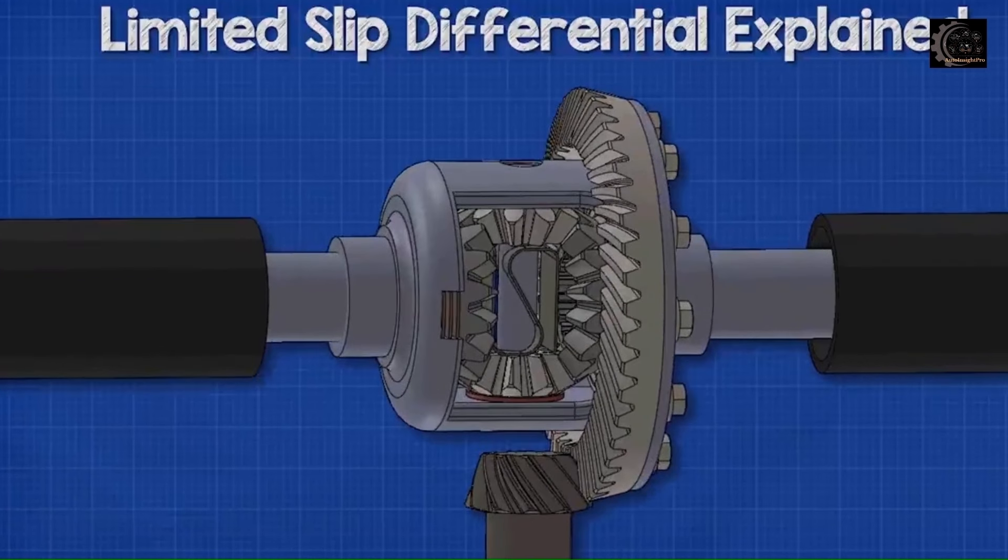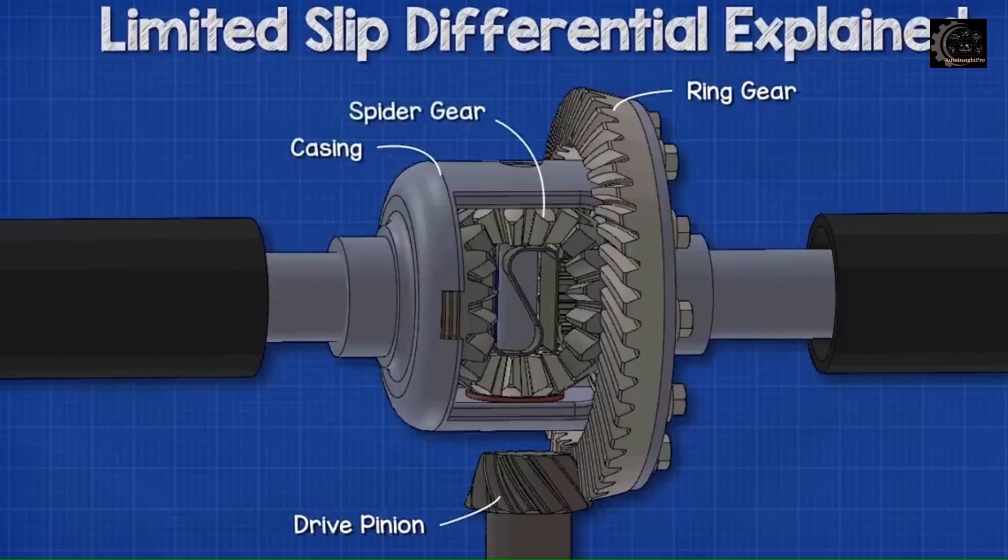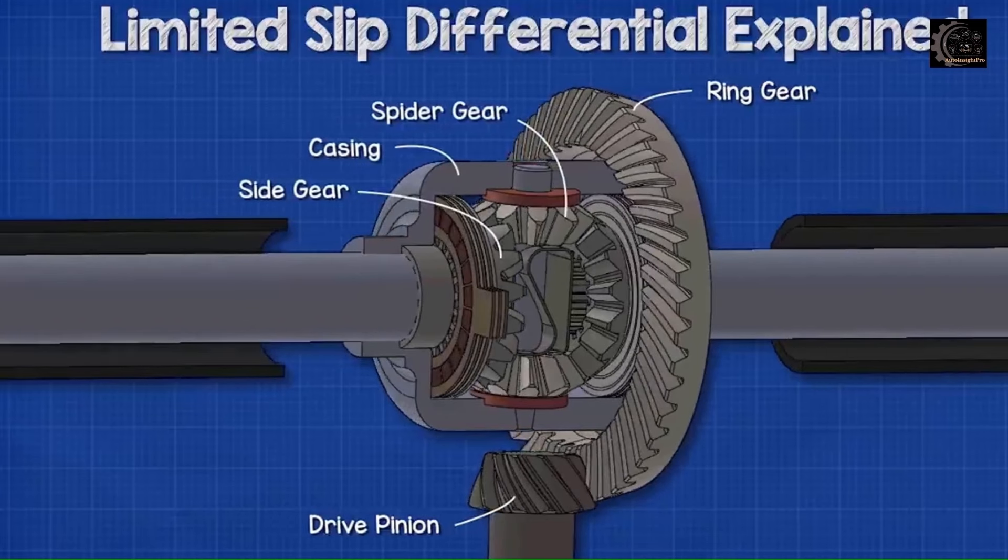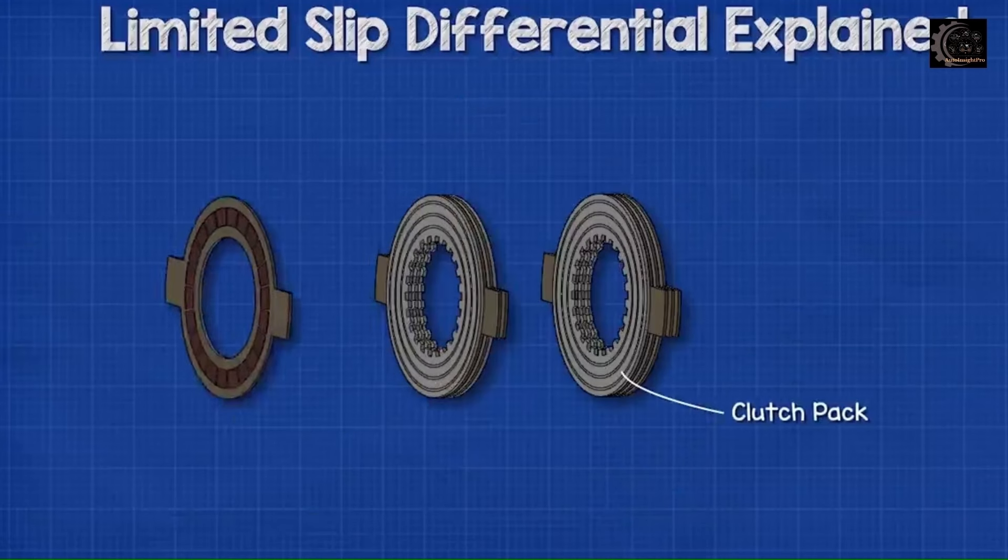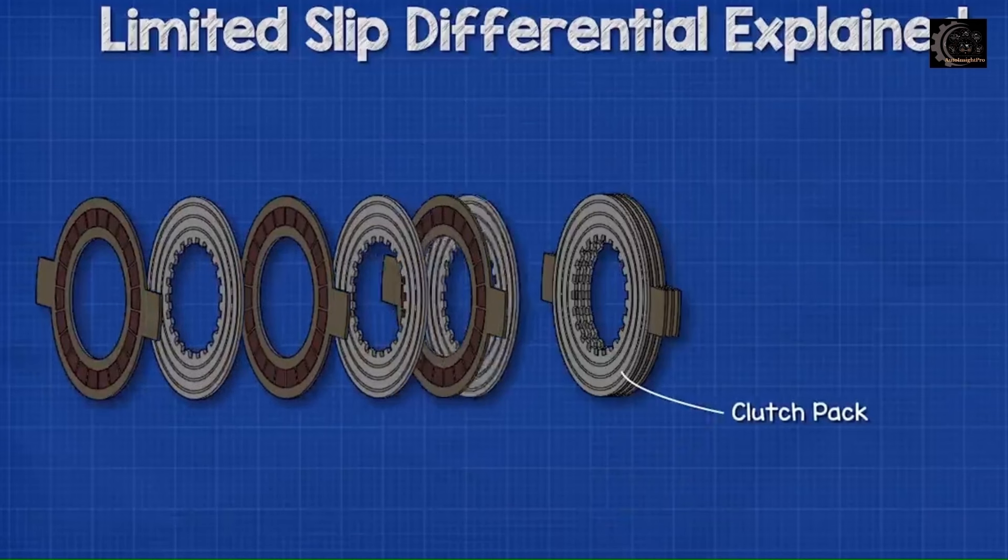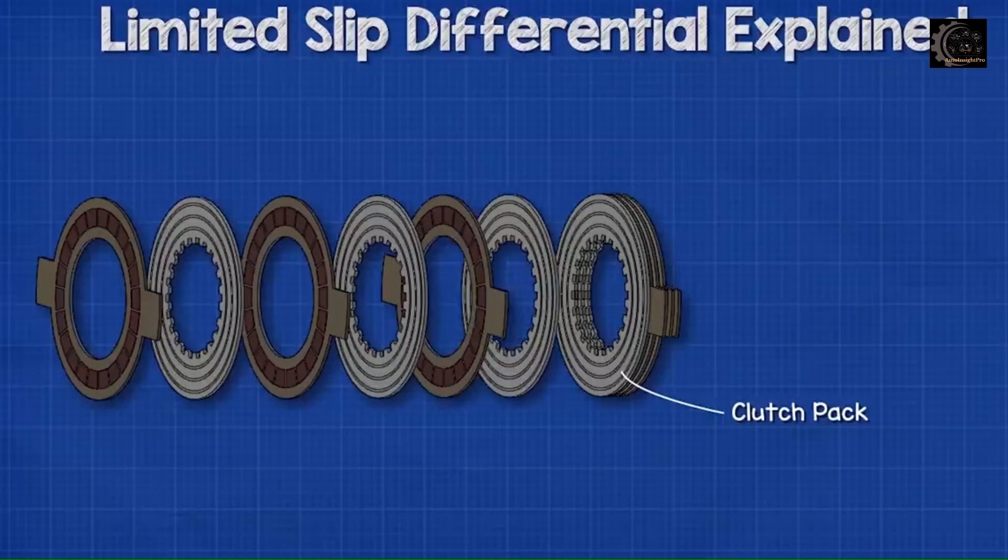With the limited slip differential, we have the same main components: the drive pinion, the ring gear, the casing, the spider gears, the side gears, and the axles. However, we do have some additional parts. Behind each side gear, we find a clutch pack, which consists of multiple layers of two different discs.